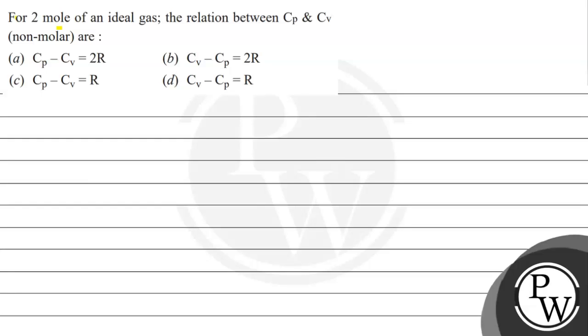Hello, let's read this question. For 2 mol of an ideal gas, the relation between Cp and Cv is non-molar R, and these are the following options given to us.